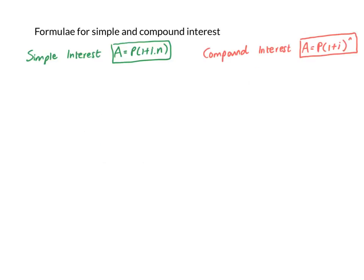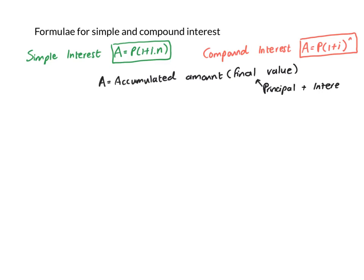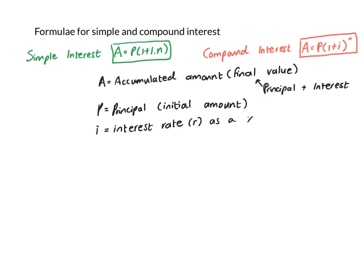It would be faster to use a formula than to work out compound interest manually. Here are the formulas for both simple and compound interest. A means the accumulated amount — the final amount you either owe or are owed, including the principal and interest. P stands for principal — the initial amount invested or borrowed. I is the interest rate, which must be entered as a decimal or with a percentage symbol. N is your time period, which could be months, years, or even weeks.